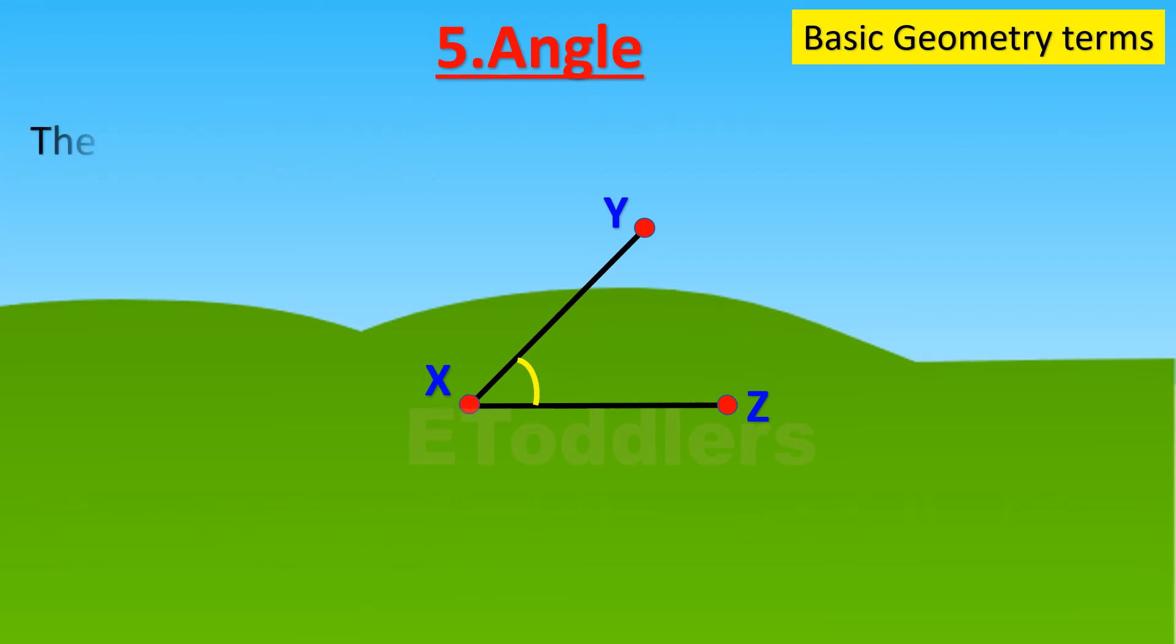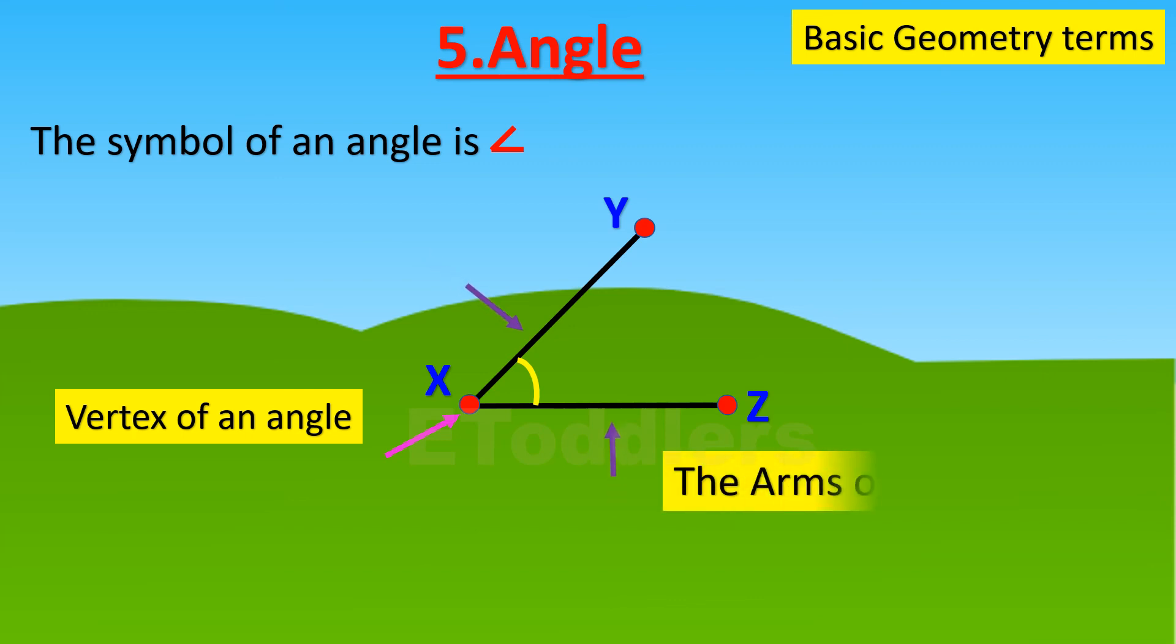The corner point of an angle is called the vertex of the angle. The two straight sides of the angle are the arms of the angle.